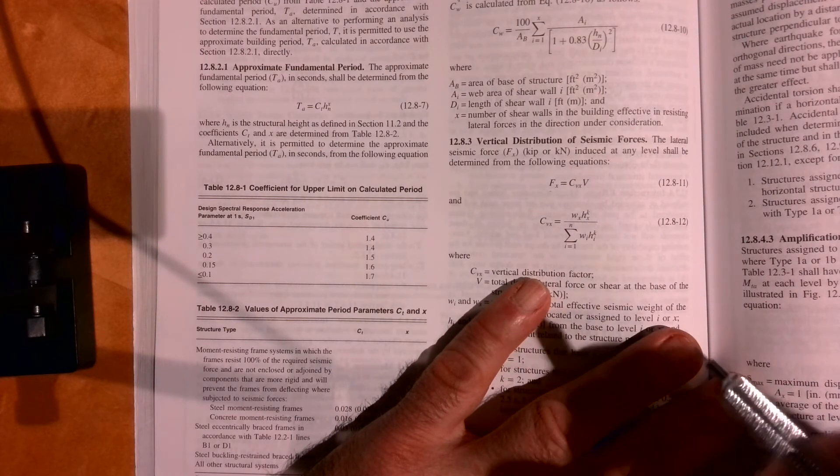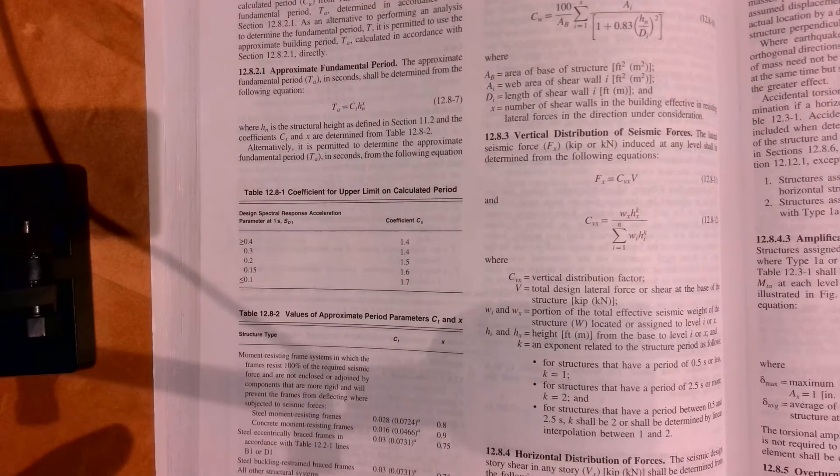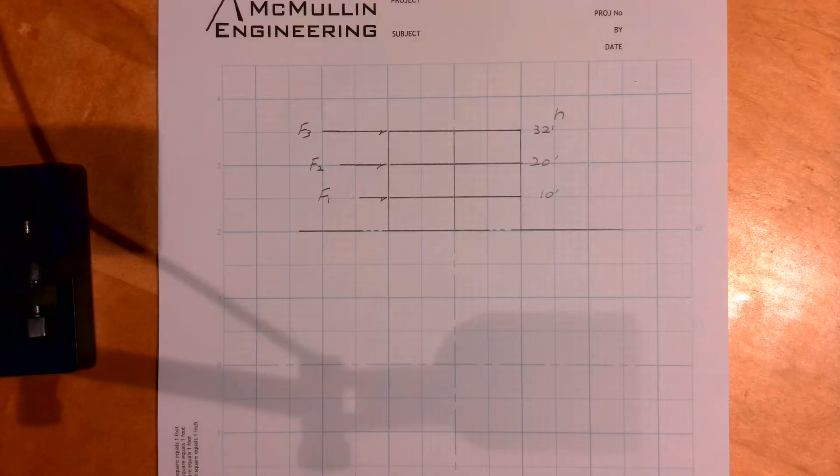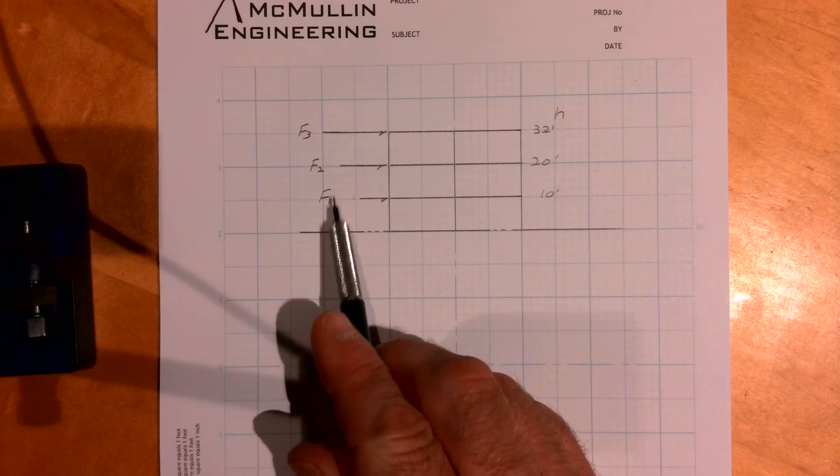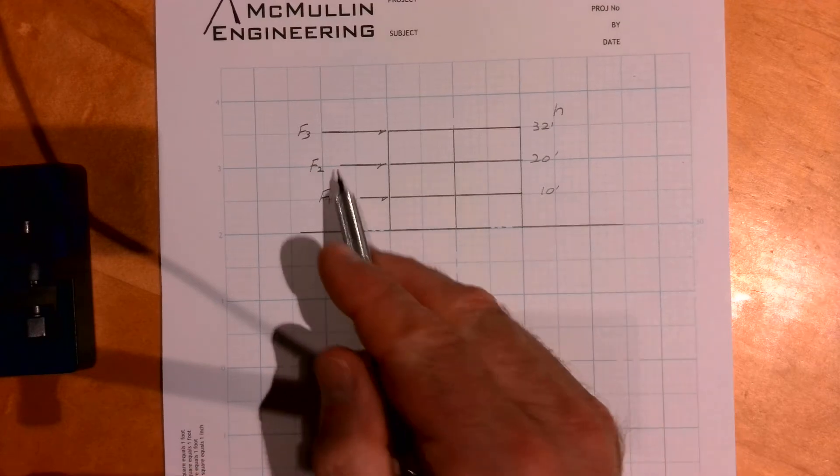So let me draw a little sketch to illustrate that, then we'll get into the numbers. Okay, so I drew this little sketch here that basically is the elevation view of the building with each floor F1, F2, F3.